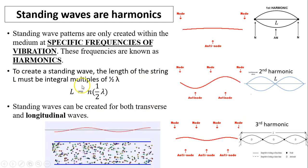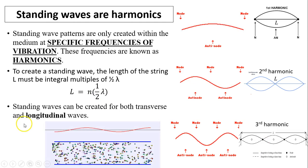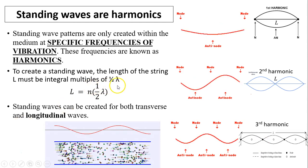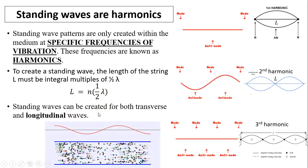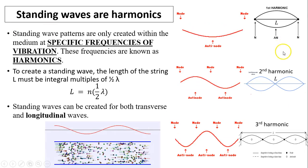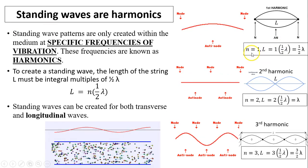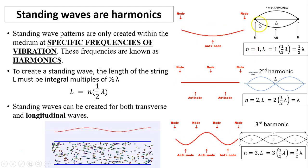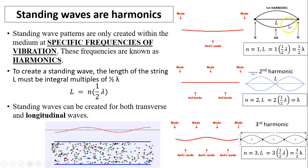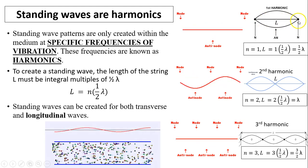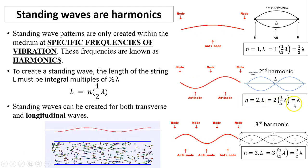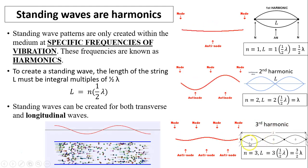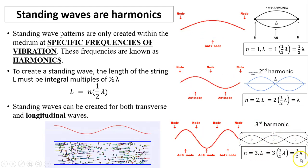To create a standing wave, the length L of the string must be an integral multiple of half a wavelength (λ). If that condition is not satisfied, you cannot create a harmonic. For the first harmonic, N = 1, so L must equal half the wavelength. For the second harmonic, N = 2, so L equals one full wavelength. For the third harmonic, L equals one and a half wavelengths.